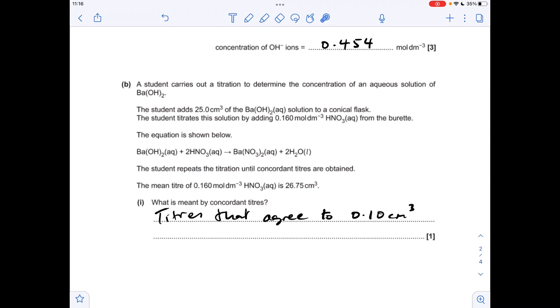Moving on to part B, what's meant by concordant titres? Well they're titres that agree to 0.10 cm cubed of each other.